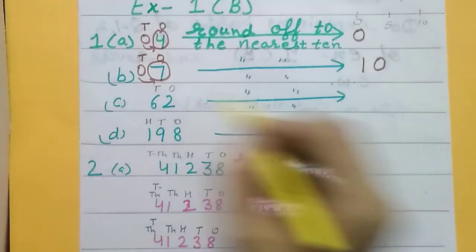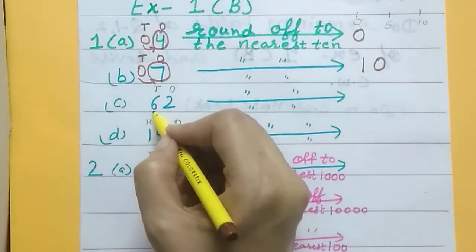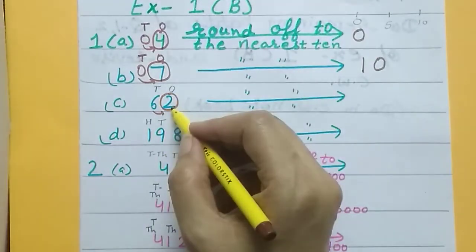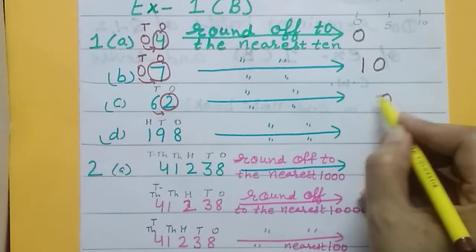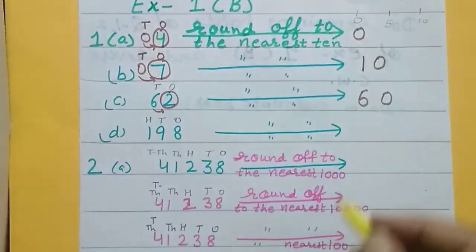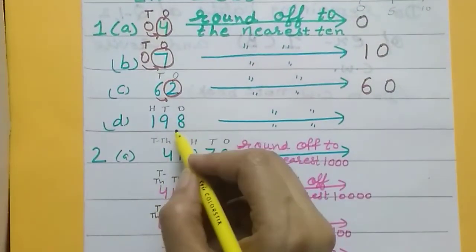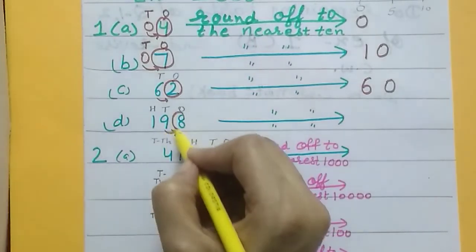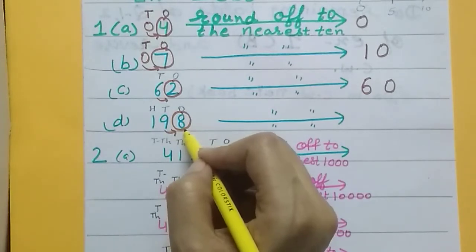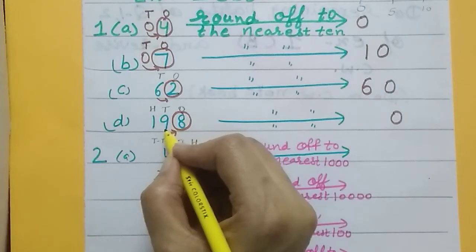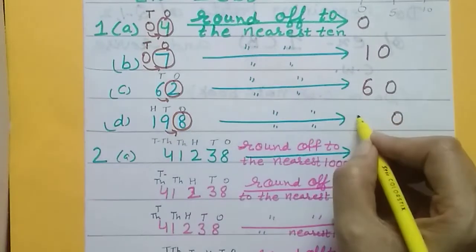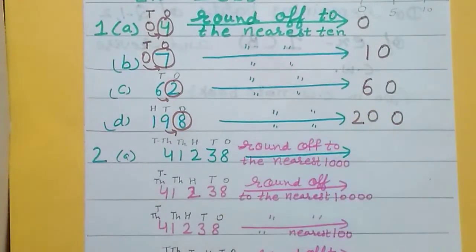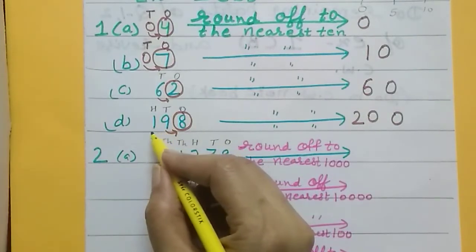Next part: round off to the nearest ten. Ones and tens — just right of the tens, circle the digit two. Two is less than five, so it will become zero and no change on the tens place. Next practice: just right of the tens, the digit is eight — more than five, so it becomes zero. Here it is 19, so nineteen will become twenty. If you are getting confused, read the remaining number together.